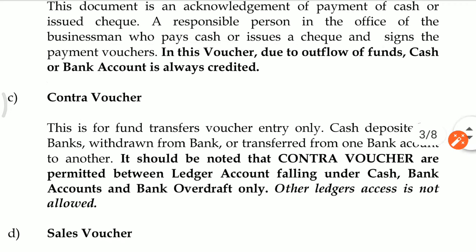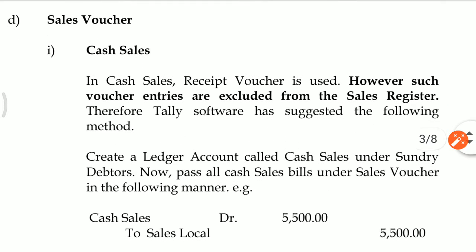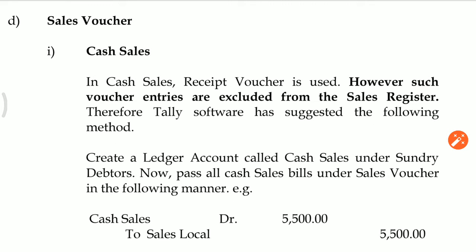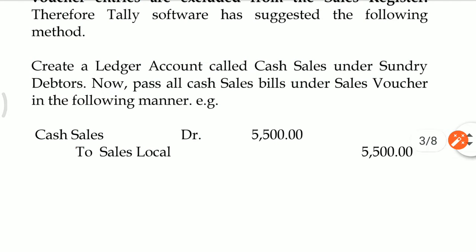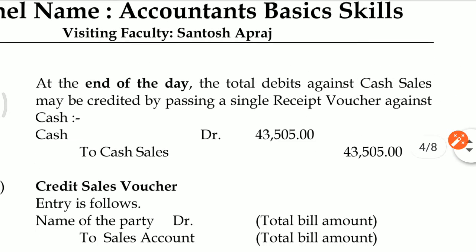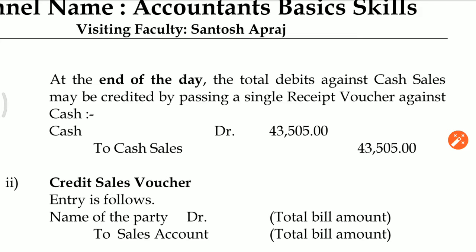In the case of Sales Voucher in Tally software, if you want a sales register which includes cash sales, they have suggested a different method for cash sales. If you book a receipt voucher for cash sales, then your accounting entry will be Cash Account Debit to Cash Sales, but such entry will not be recorded in the sales register. So Tally suggests: you have to create a Cash Sales ledger account in Sundry Debtors. Whenever you want to book cash sales, the accounting entry will be Cash Sales to Sales Local using Sales Voucher. At the day end, you pass the receipt entry Cash Account Debit to Cash Sales. In both entries, the cash sales account ledger will be zero.